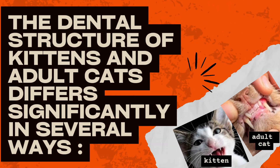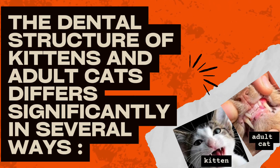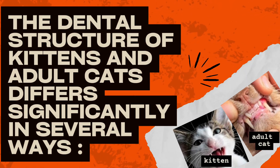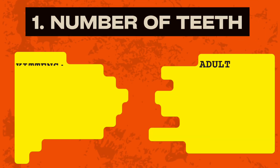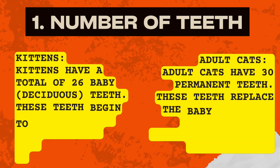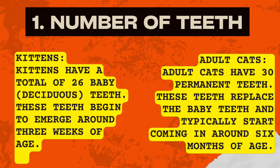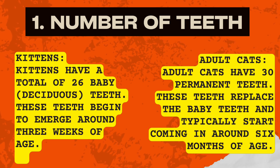The dental structure of kittens and adult cats differs significantly in several ways. First, the number of teeth: kittens have a total of 26 baby, or deciduous, teeth, which begin to emerge around 3 weeks of age. Adult cats have 30 permanent teeth, which replace the baby teeth and typically start coming in around 6 months of age.